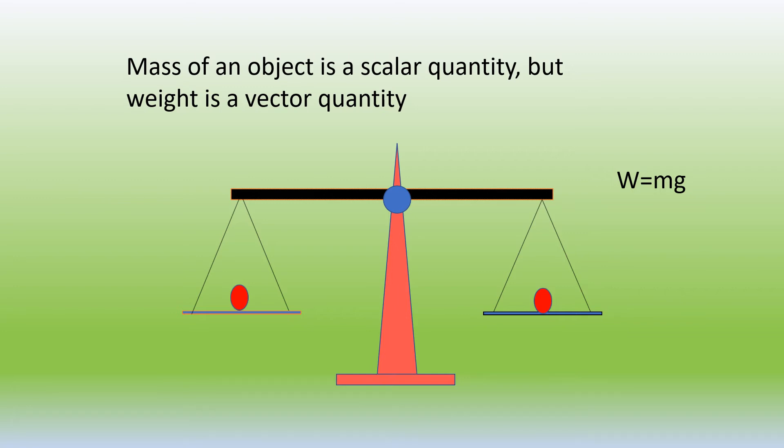On the other hand, mass is the amount of something. Is it directed any way? No, it has no direction. Hence, it is a scalar quantity.